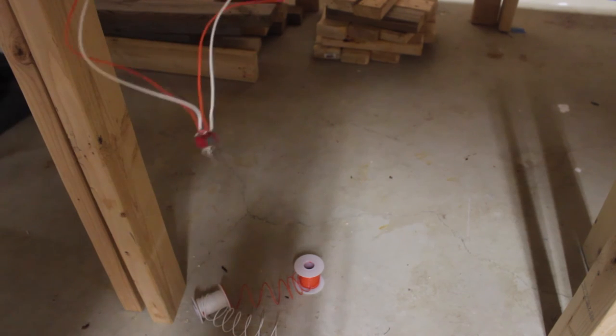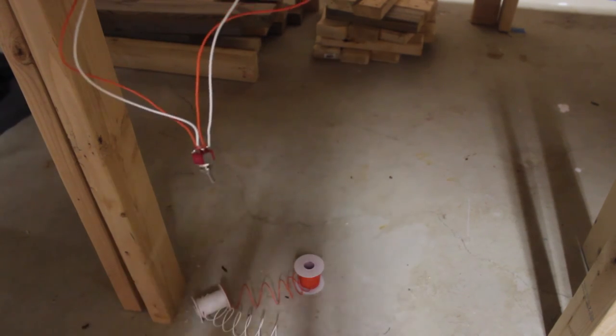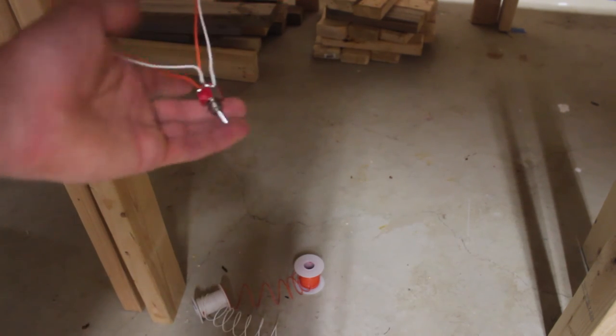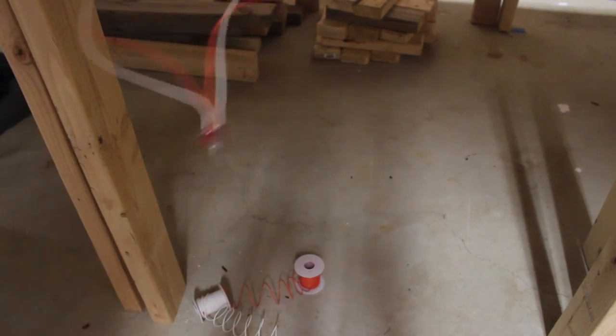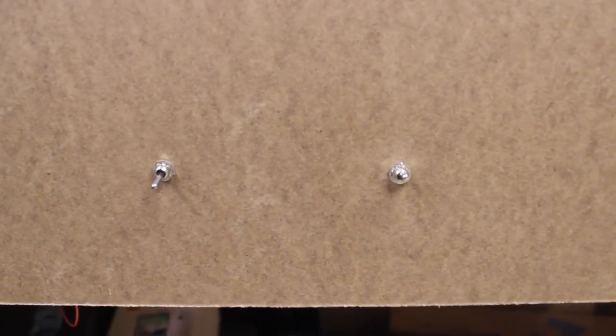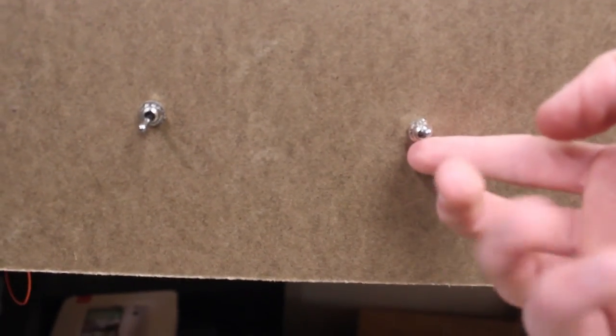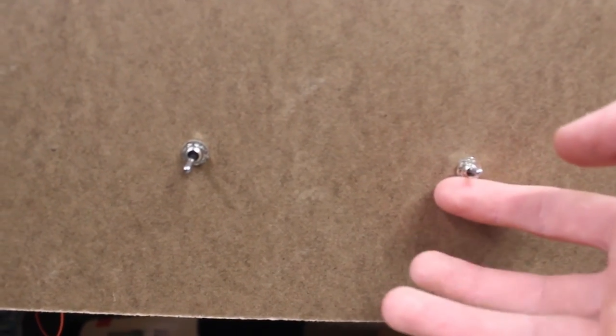Now you don't want to leave your toggles dangling around and under your layout where you can't reach them. So what you can do is, as I have done over here, you can mount them to the fascia board. And you can also choose if you want them to be up or down to be lined for the main line.